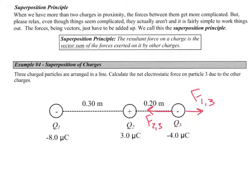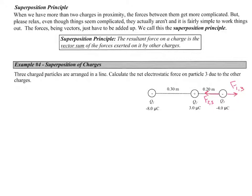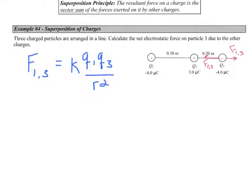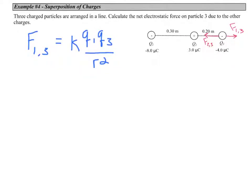All we need to do is use Coulomb's Law to figure out force two on three and force one on three, then add them using vector addition. For force one on three, applying Coulomb's Law with Q1 and Q3, they are 0.5 meters apart.